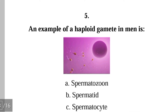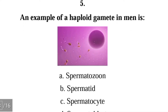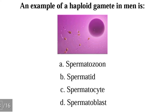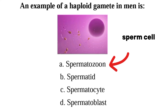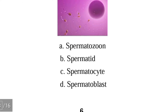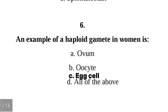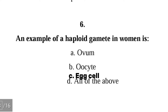Question 5: An example of a haploid gamete in men is — A. spermatozoon, B. spermatid, C. spermatocyte, D. spermatoblast. The correct answer is A, spermatozoon. A spermatozoon is the same thing as a sperm cell and it is the gamete in men.